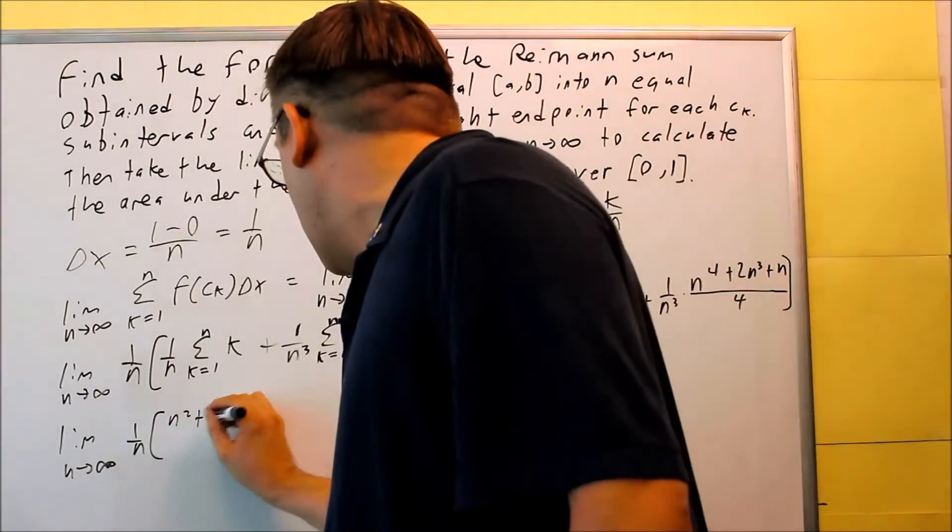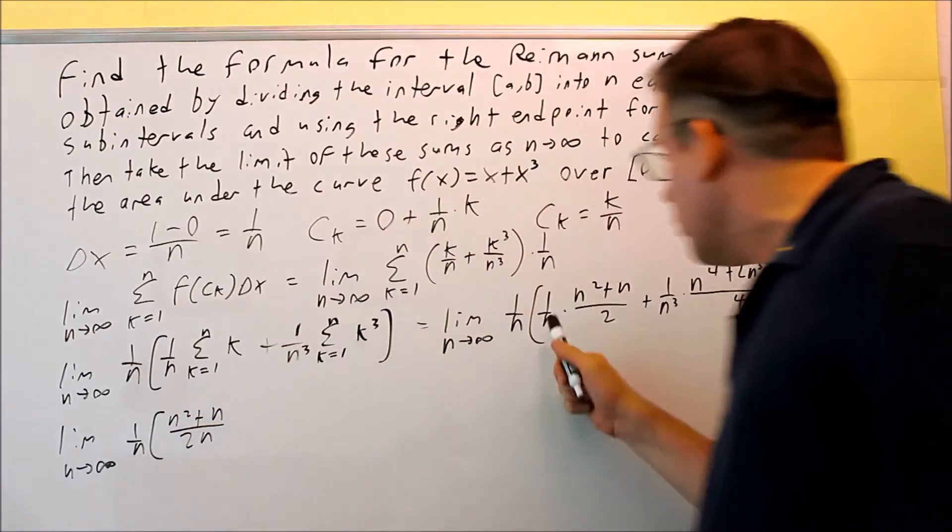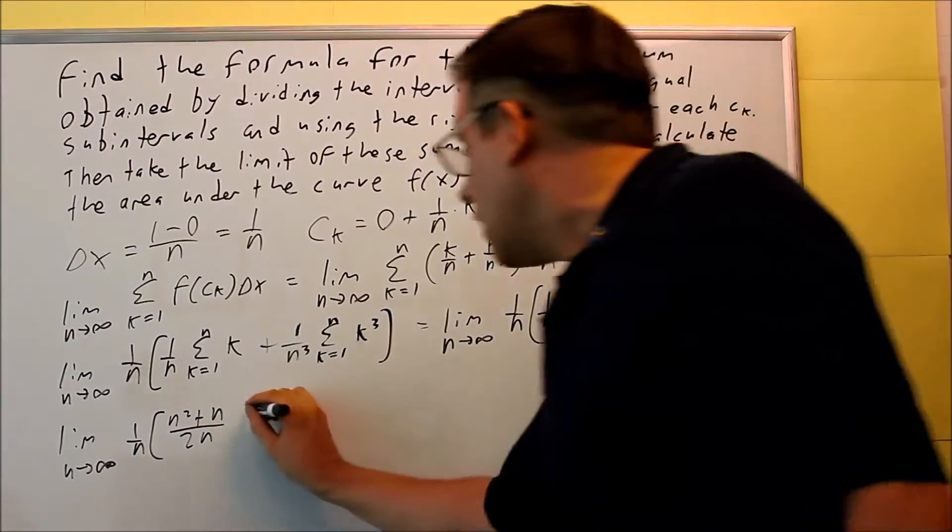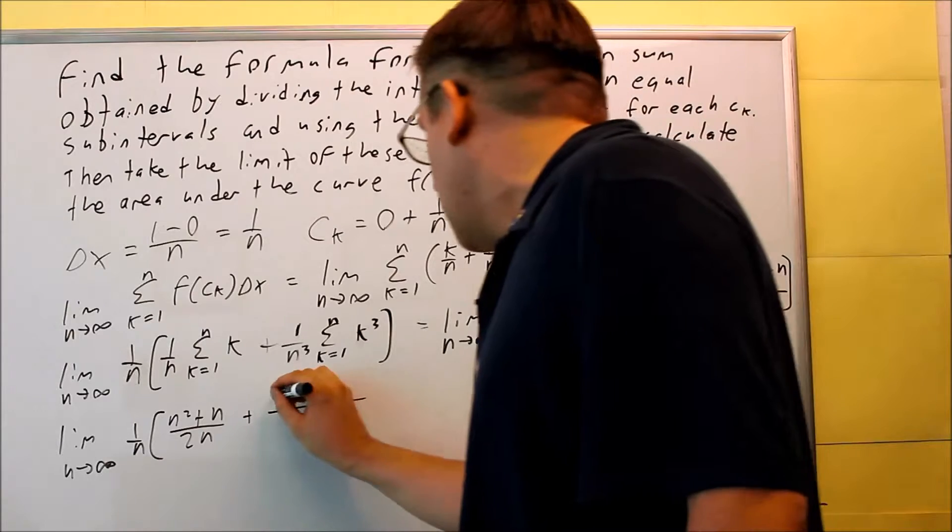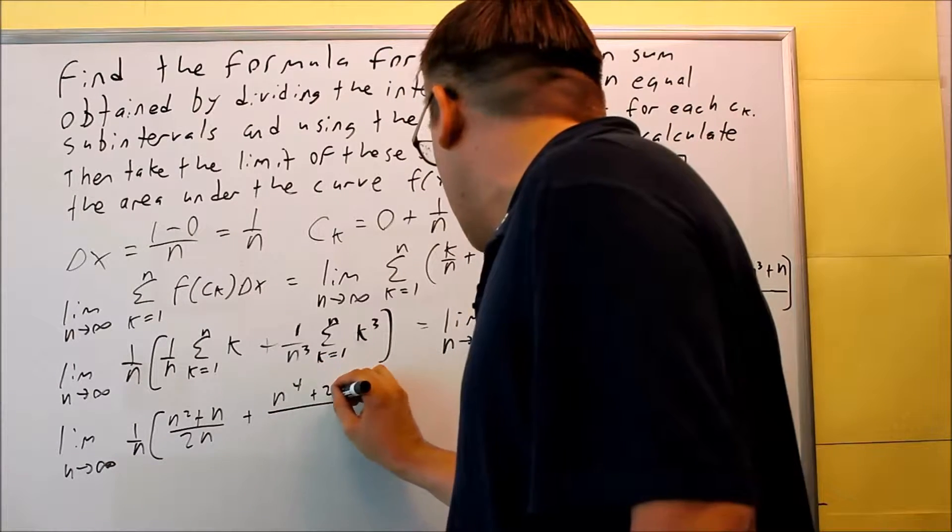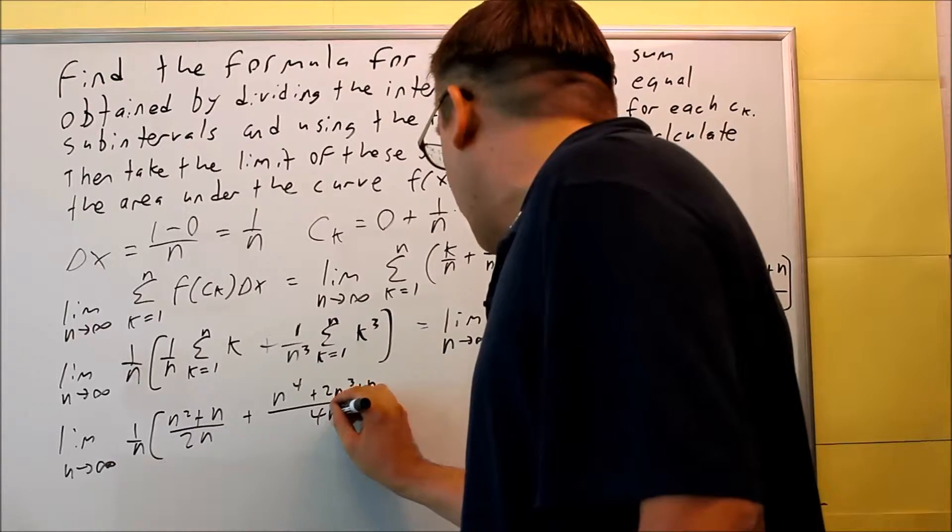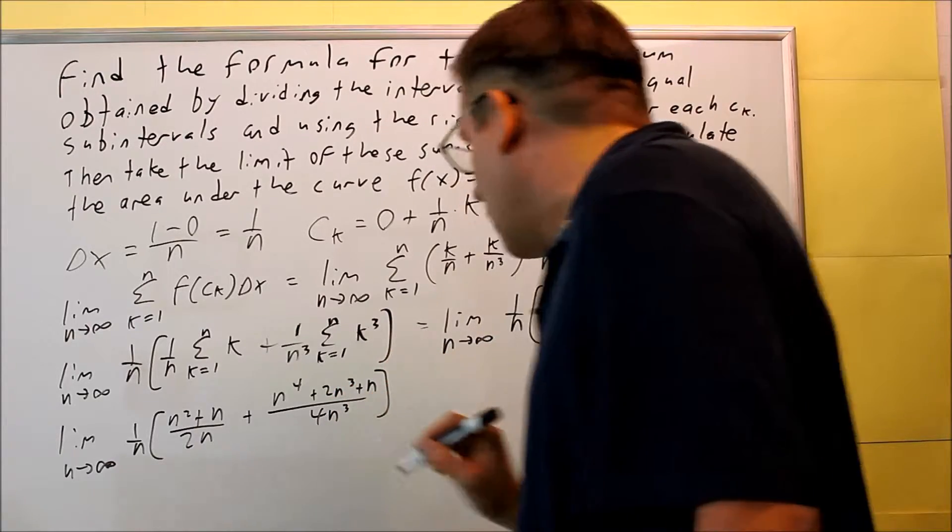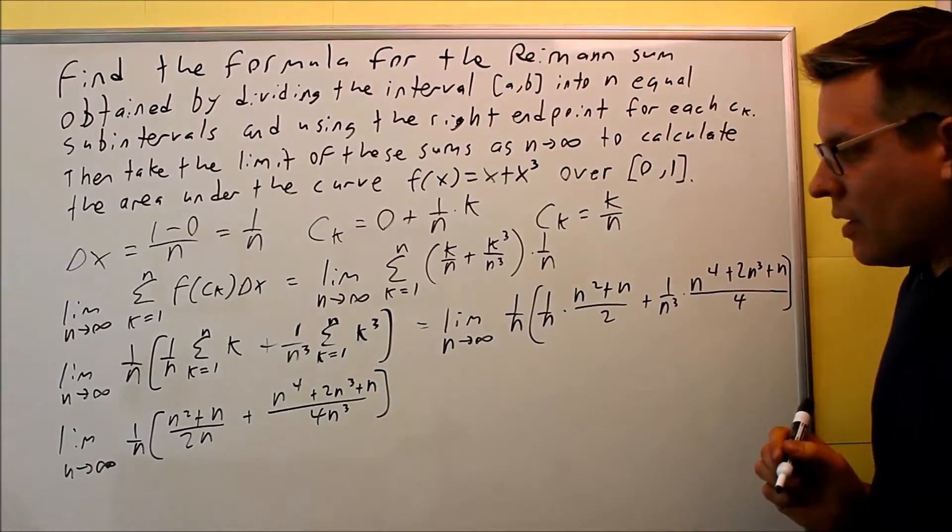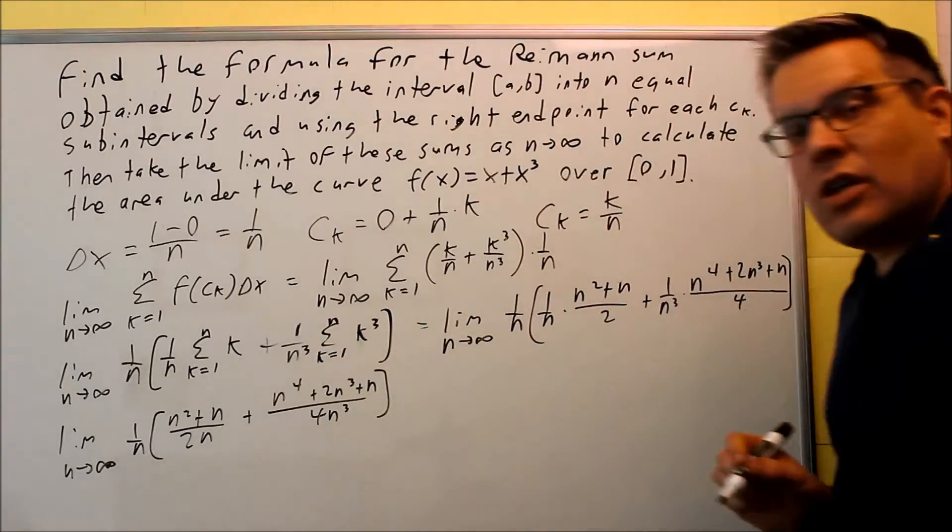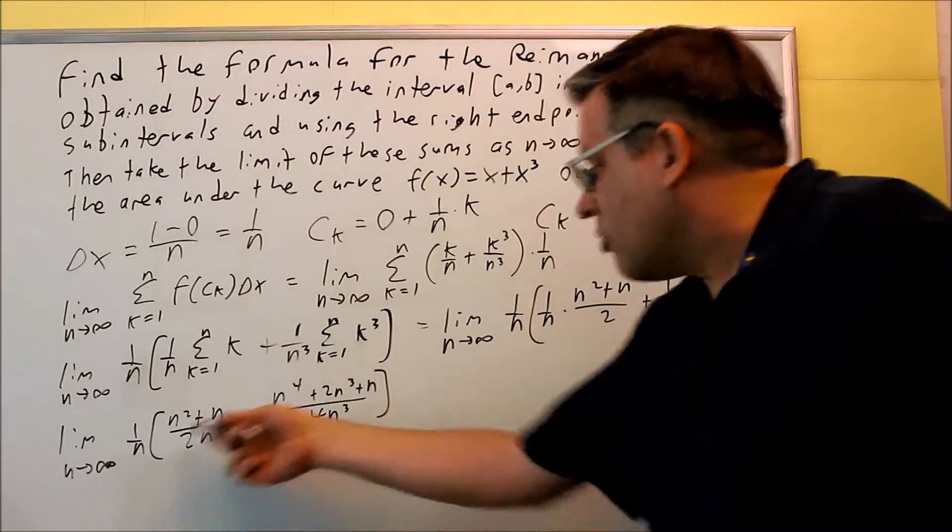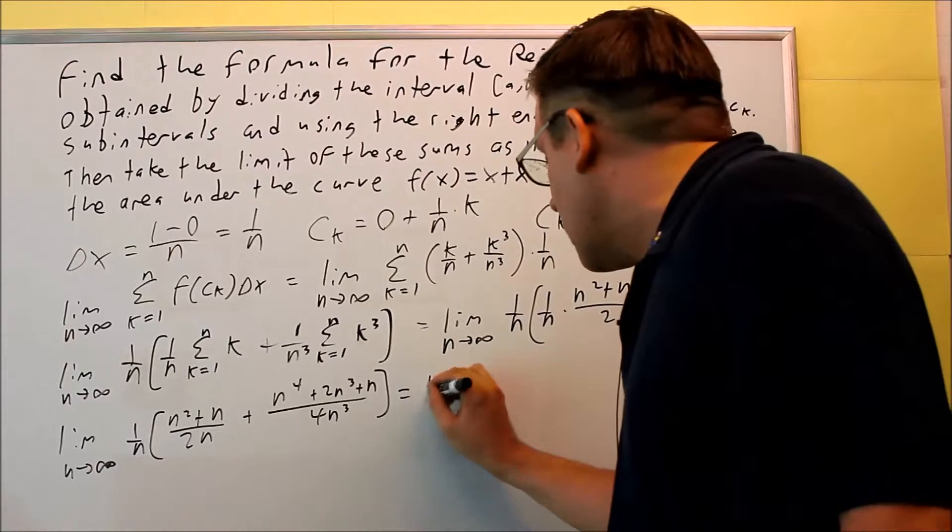So I'll get n squared plus n over 2n when I combine this. And then the other part I'm going to get is n to the fourth plus 2n cubed plus n over 4n cubed I'll have on the inside. Now that I've combined and worked with the inside, I'm now ready to distribute the 1 over n inside each one.